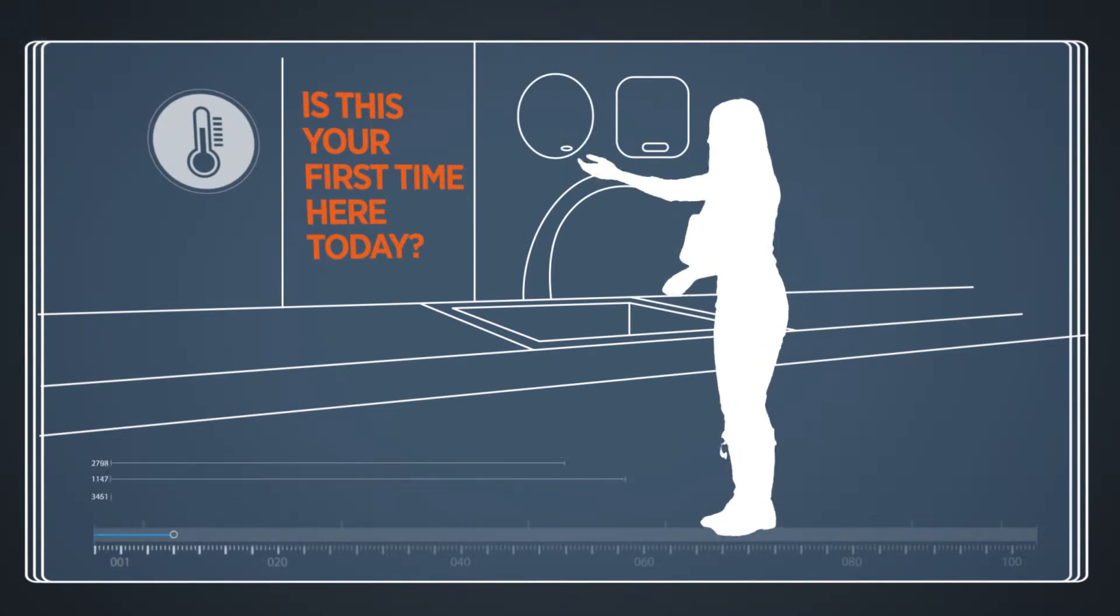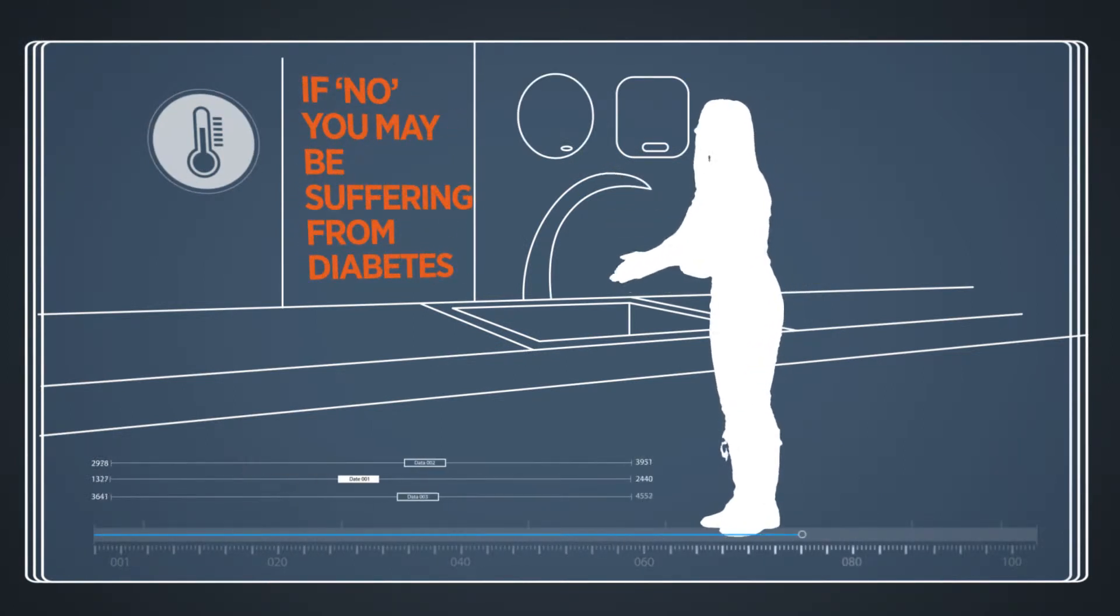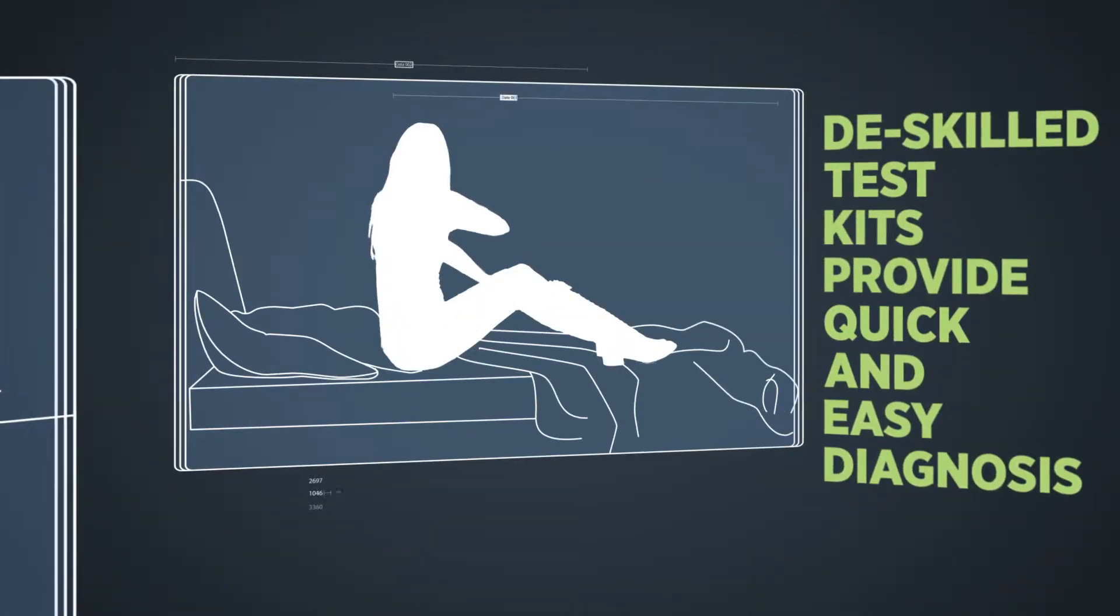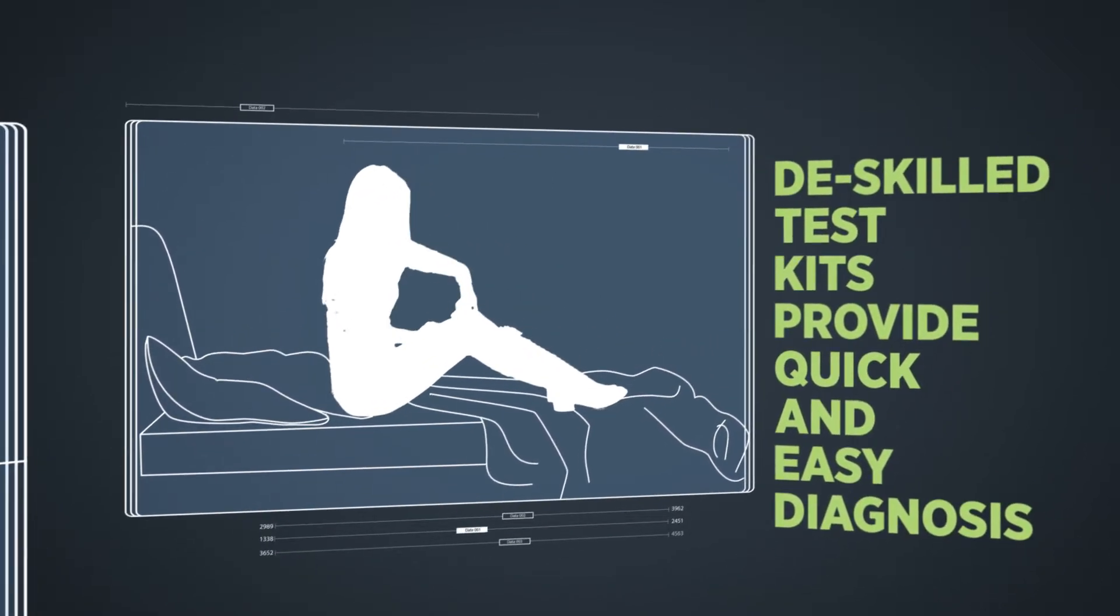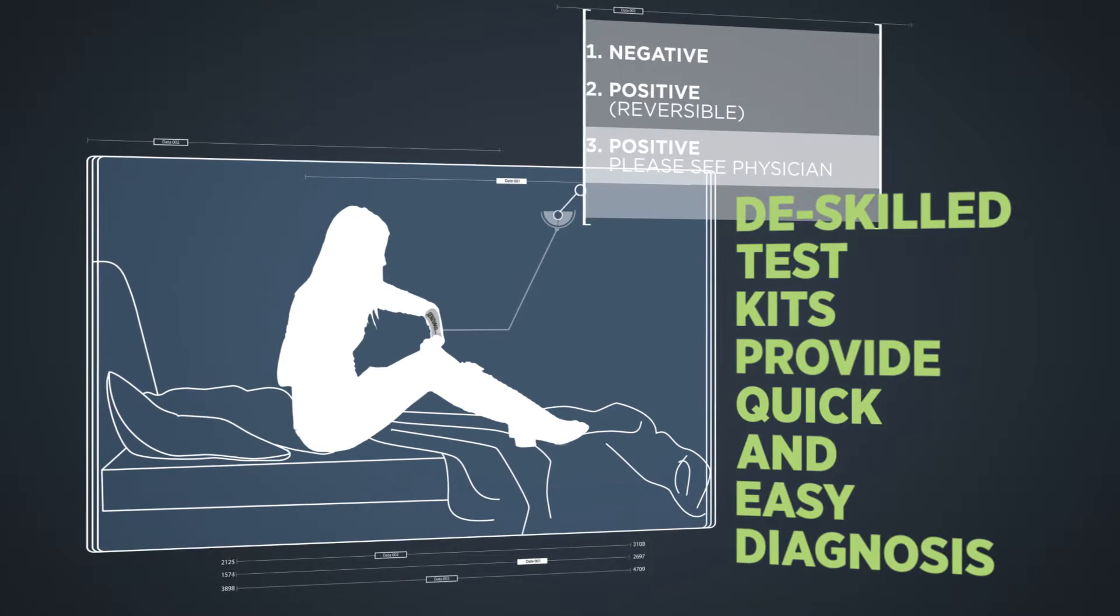I saw a screen about the side effects of diabetes and it spooked me. I looked online for locations for a test kit. Fortunately there was one just round the corner. I did a de-skilled test kit. I don't know how it works, but I do know it cost less than a loaf of bread. It didn't hurt a bit and was really easy to use.